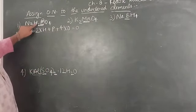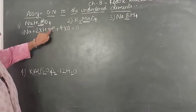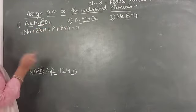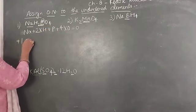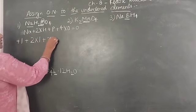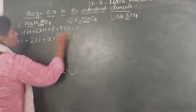Okay, so Na plus hydrogen 2, so 2 into H plus P plus 4 into O equals 0. Now write the oxidation number of each and every element: sodium plus 1, plus 2 into 1, plus X, plus 4 into minus 2 equals 0.